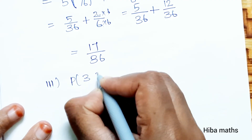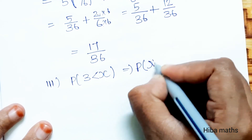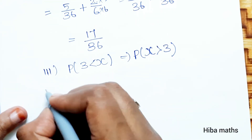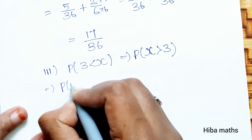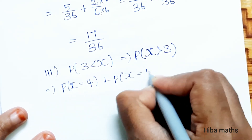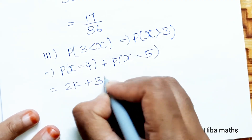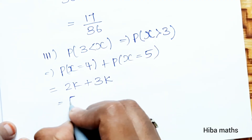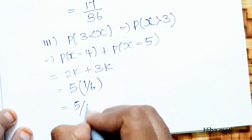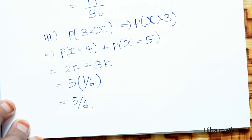For part 3, find P(X > 3). We add P(X=4) + P(X=5): that is 2k plus 3k = 5k. Substituting k = 1/6, the answer is 5/6. Thank you so much for watching.